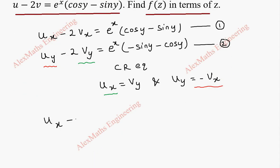So the first equation we keep as it is: ux minus 2vx equals e^x cos y minus e^x sin y.